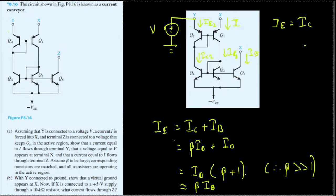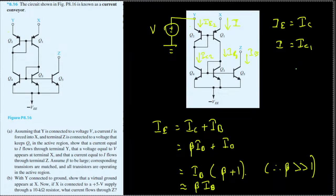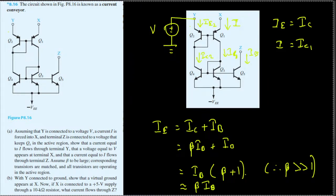The transistors are matched, so they form a current mirror. Whatever current is on one side will be the exact same current on the other side. So if ic1 has a certain value, the exact same value will appear as ic2. Therefore ic1 = ic2.